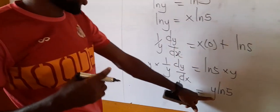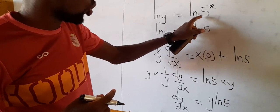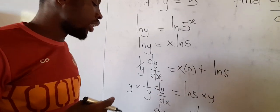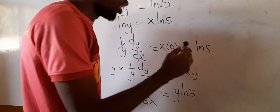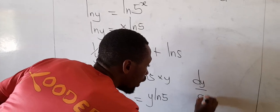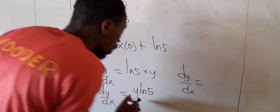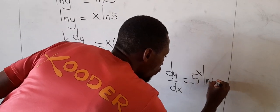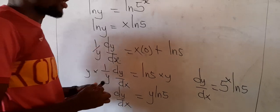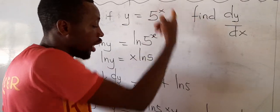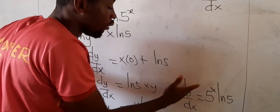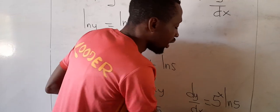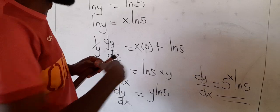However, we don't want y in our final answer. We shouldn't leave y there. But look — y is equal to 5 exponent x, so we just replace it. Our dy/dx will be equal to 5^x times ln 5. So the derivative of y equals 5^x is dy/dx equals 5^x ln 5. I hope you get that. We'll solve one more question so that you become comfortable with it.